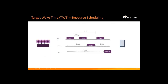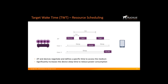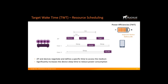Target Wake Time (TWT) is a concept developed in 802.11ah that allows devices to negotiate when and how often they will wake up to send or receive data. TWT increases device sleep time and substantially improves battery life — particularly important for IoT devices. It also enables wireless access points and devices to negotiate specific times to access the medium, helping optimize spectral efficiency by reducing contention and overlap between users.